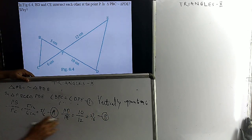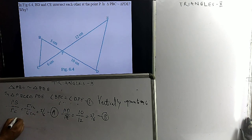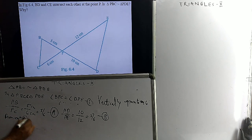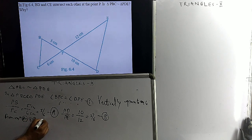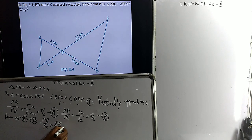From equations A and B, we conclude that PB by PC is equal to PD by PE. This is equation number 2.